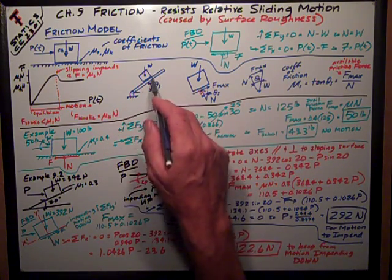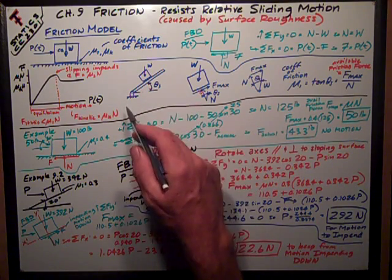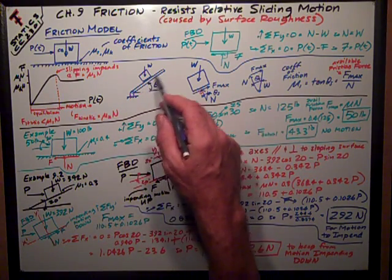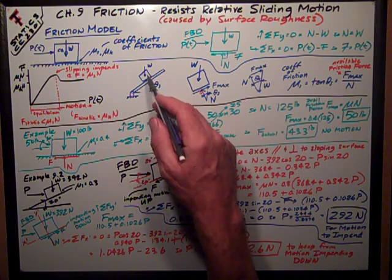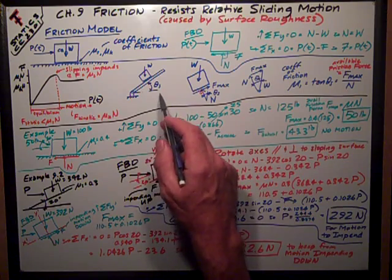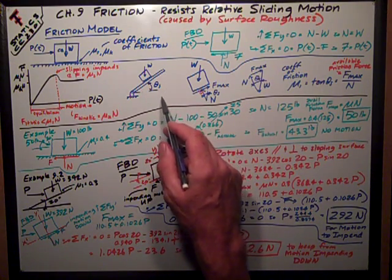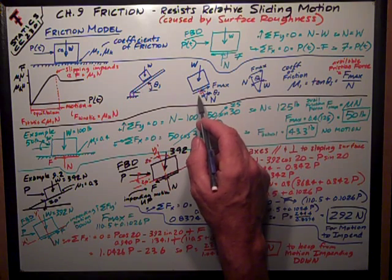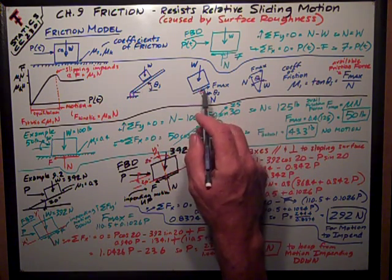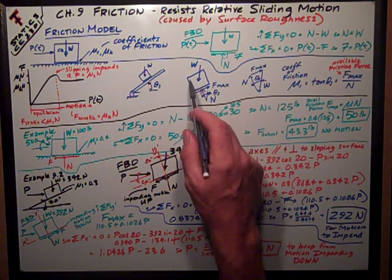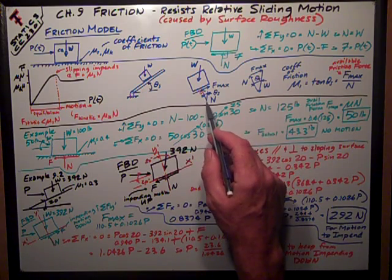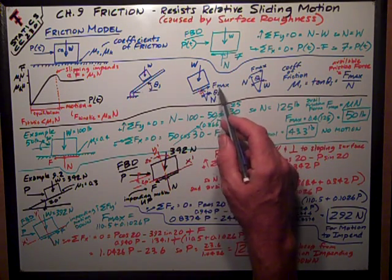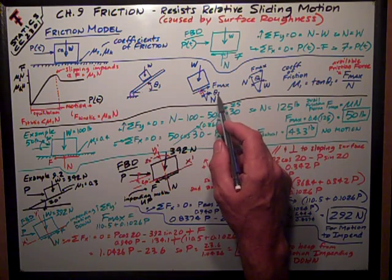The way they determine these coefficients of friction is they actually use a sloping mechanism where you can put the surface you're trying to measure the coefficient of friction on, along with the block made out of whatever material, and you gradually raise the handle until the block starts sliding. At that point, where motion is impending, here's a free body diagram: we've got the weight acting through the center of gravity, the normal force acting perpendicular to the sliding surface, friction acting parallel to the sliding surface, and we have this angle theta sub s.